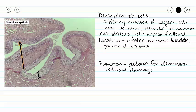Our transitional epithelium is going to allow for distention or stretching of an organ without damaging any of the tissue. We can't say that our transitional epithelium does stretch and recoil because we don't have elastic fibers in our transitional epithelium.